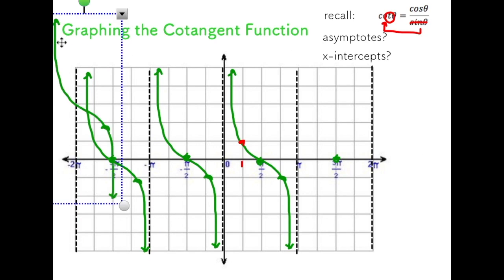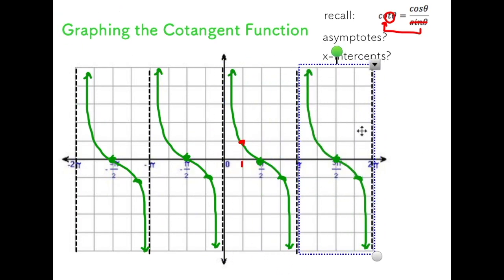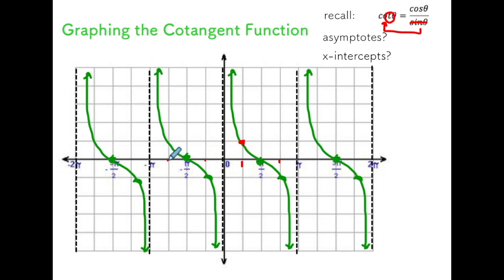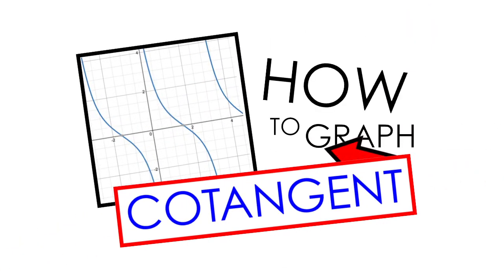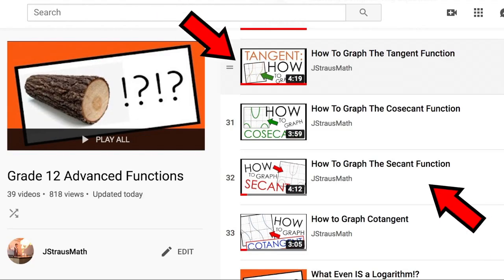In the end, you get a graph that looks like this. It's just using the idea that we can write the reciprocal ratio, check the asymptotes, check the x-intercepts, and then substitute in different values for theta that are easy to compute. Thanks for watching these videos. I'm going to link a few of the other ones to this one — check out graphing tan, cosecant, and secant. Thanks for watching.